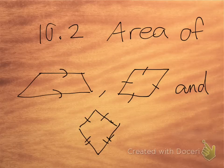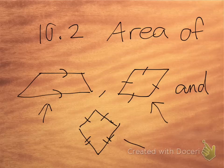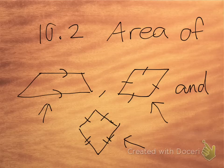Today we are talking about lesson 10-2, which is the area of trapezoids, rhombuses or rhombi, and kites. There are going to be two parts as usual for this lesson. The first part we're going to look at finding and proving the formulas. On the second part, we'll be looking at specific examples.